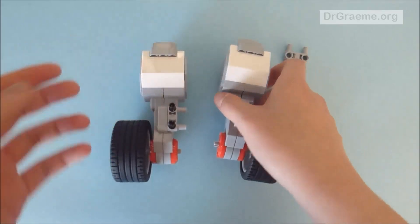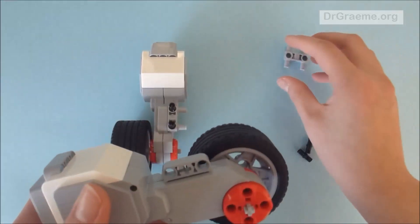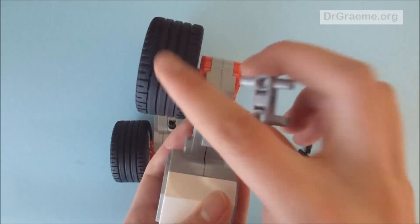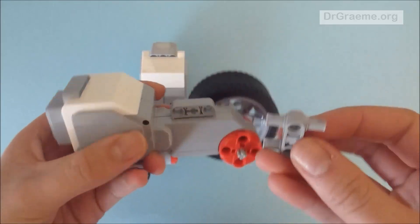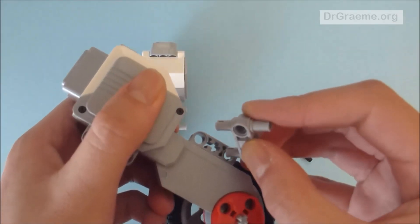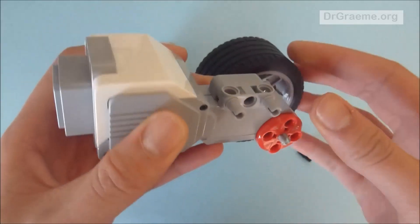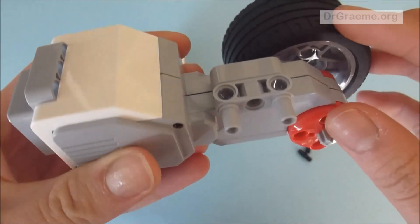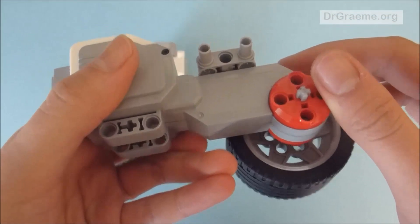Now do the same on the other motor. Take the H piece and see where the tire is - you're going to place the H piece on the other side, like this.